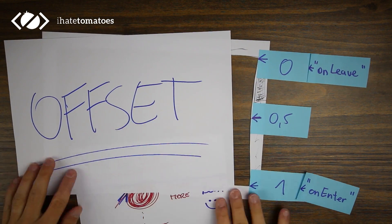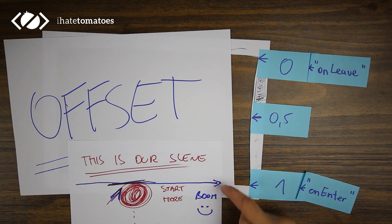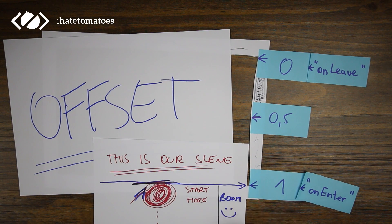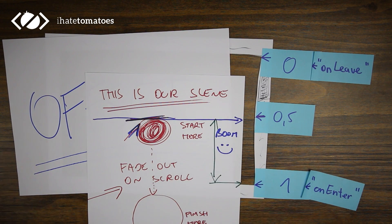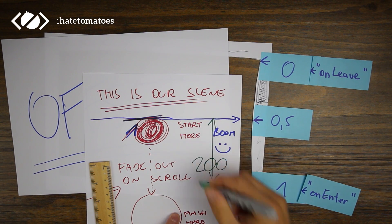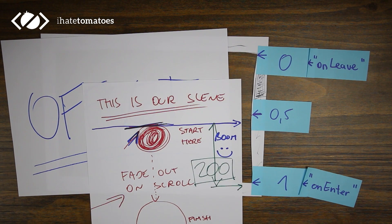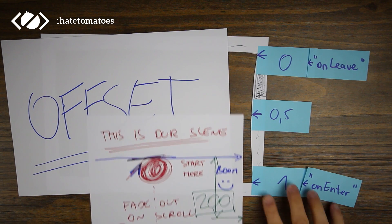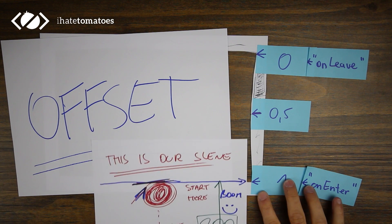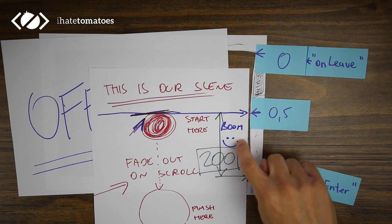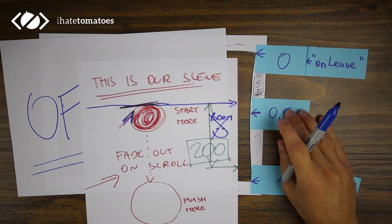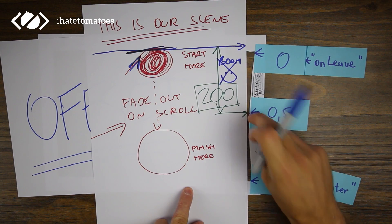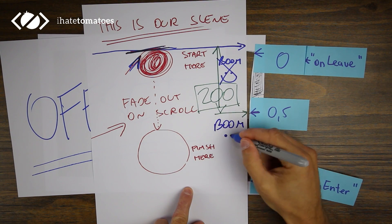To be in precise control of your animation, you can also define an offset. In our example, if we set the offset to 200, we would see the animation being triggered 200 pixels later — that means the user would need to scroll an extra 200 pixels compared to without the offset.